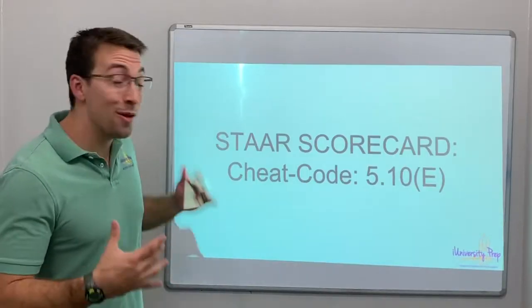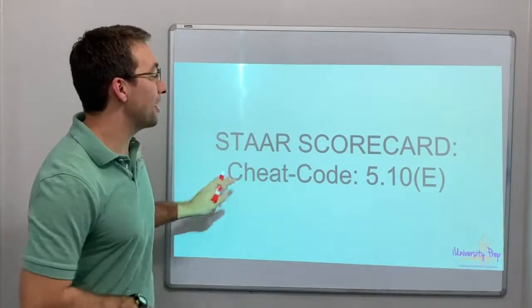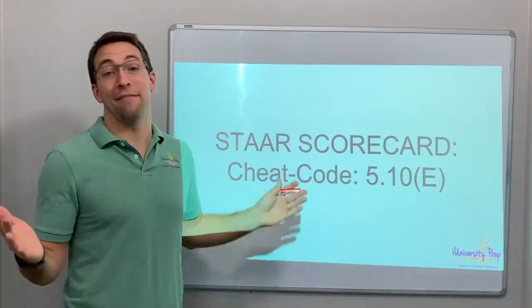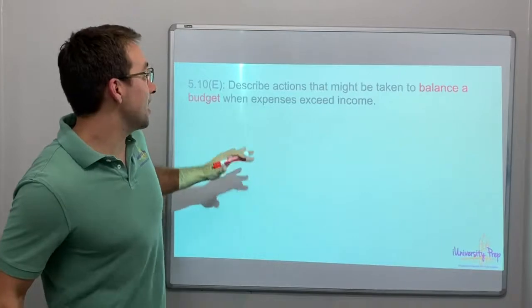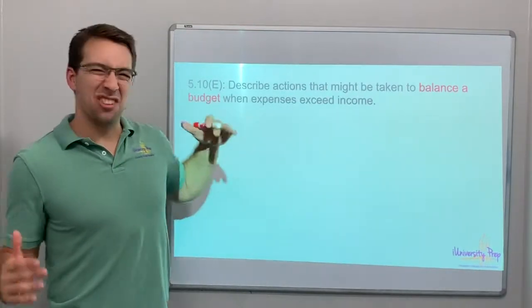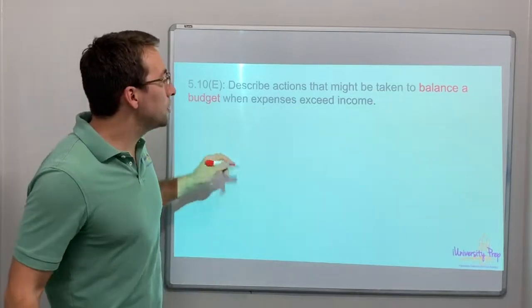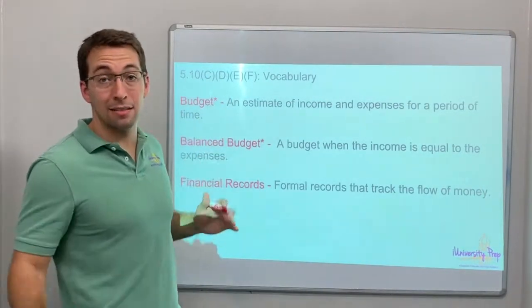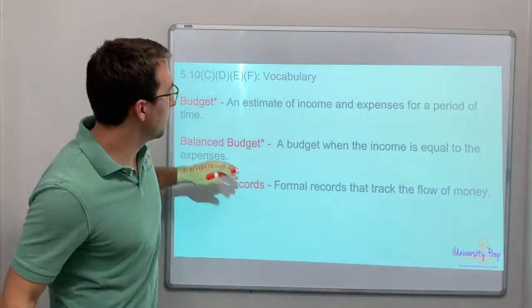Hey friends, almost done with all of the STAR scorecard cheat codes. 5.10E is the cheat code. We have E and F and that's it, so we're almost done. Talking about money again – describe the actions to balance their budget. We've talked about all of this vocab in the last video, so go to 5.10C and you will see all of this vocab.